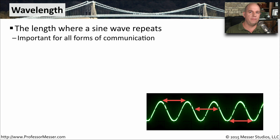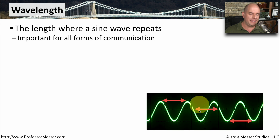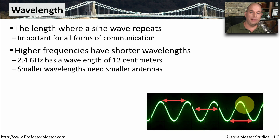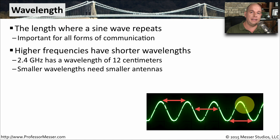We often discuss wavelength when talking about our wired and wireless networks. A wavelength is the length where a sine wave is repeating — when you start to see a repeat, that is the length of that particular wave going through the medium. As frequencies get higher, wavelengths get shorter. A 2.4 GHz wireless network will have wavelengths approximately 12 centimeters in length, and we need antennas that are properly tuned to send and receive that exact wavelength size.